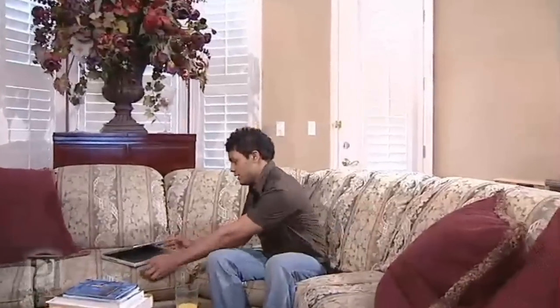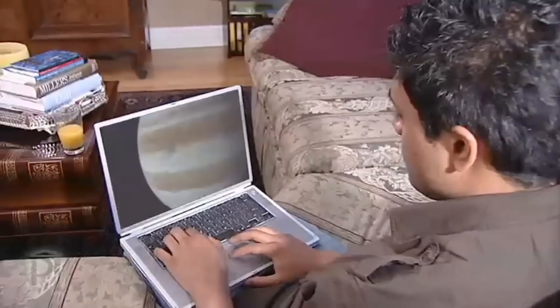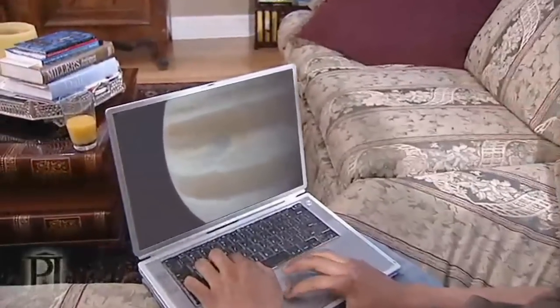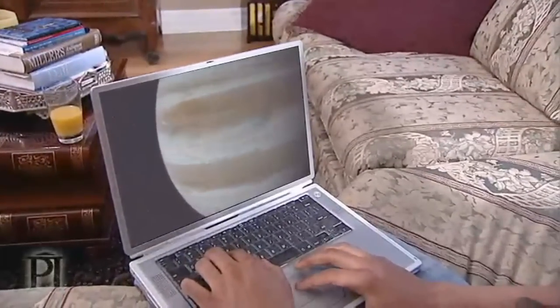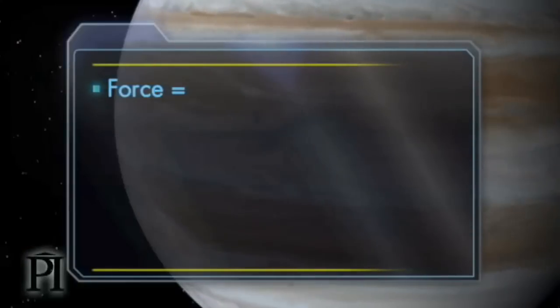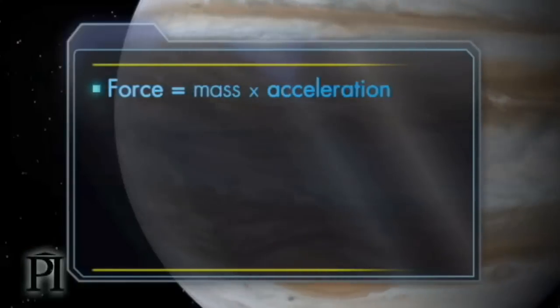So how can we use these two numbers to calculate the sun's mass? Let's start with Newton's second law of motion, which says that the net force acting on Jupiter is equal to its mass times its acceleration.